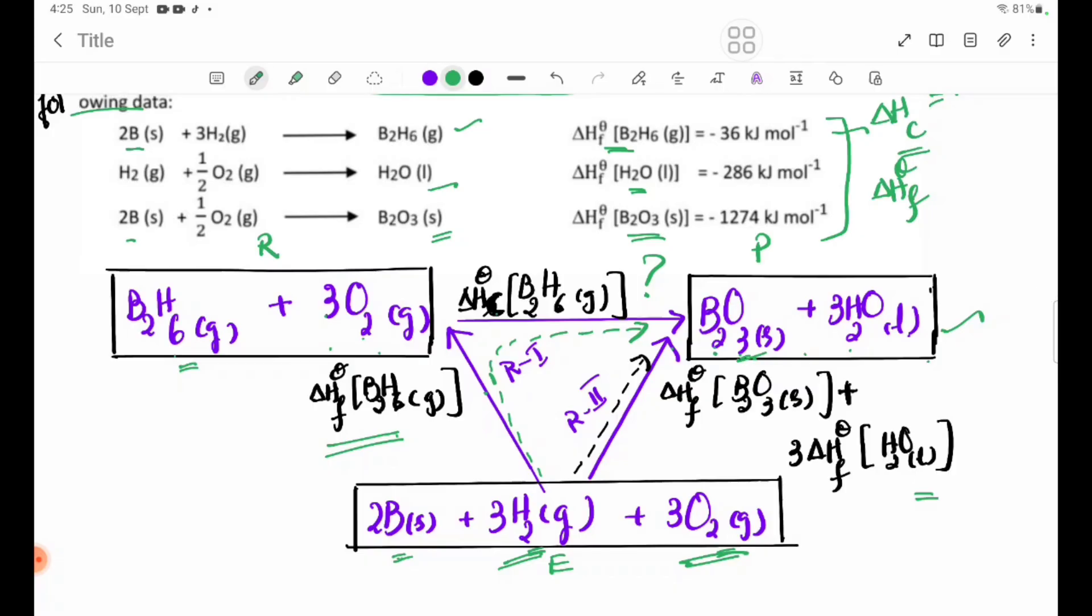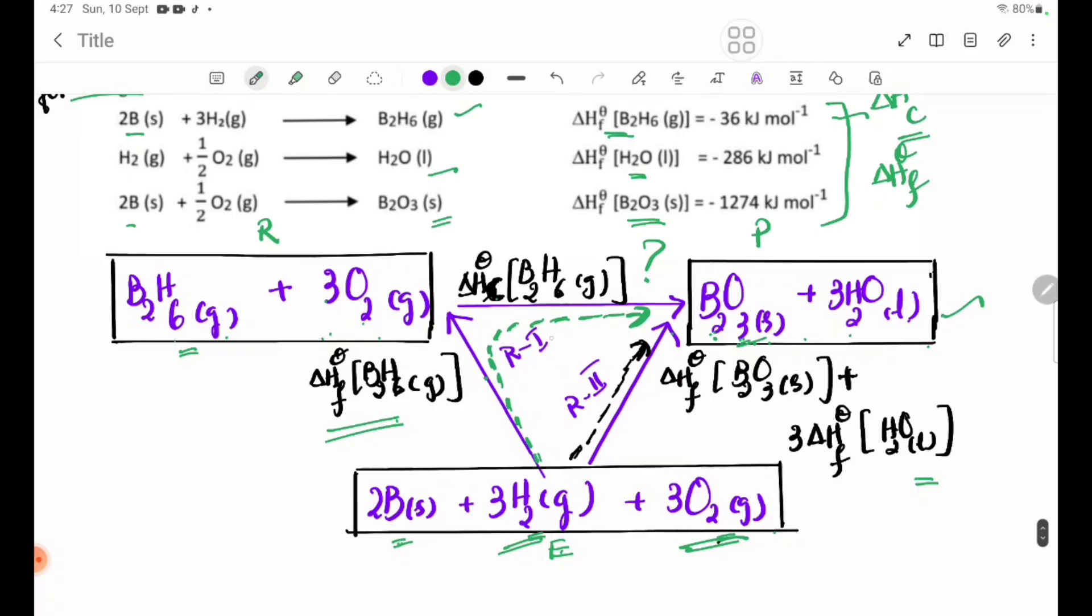The elements in the equation are B2H6, which becomes B2O3 plus 3H2O in the reaction. B2O3 equals B2O3.